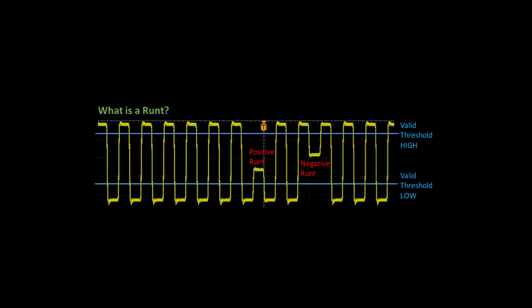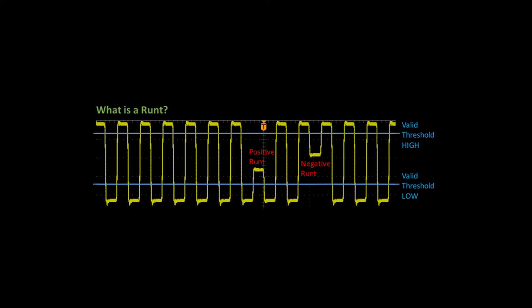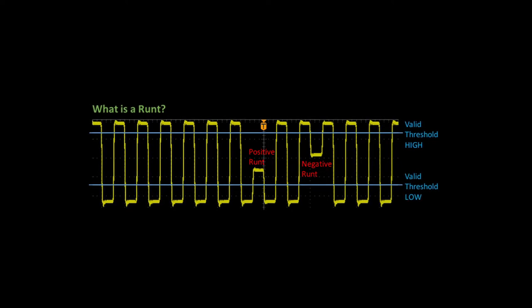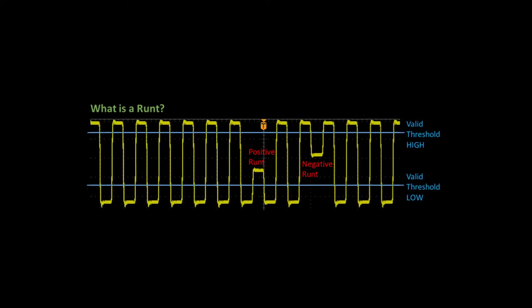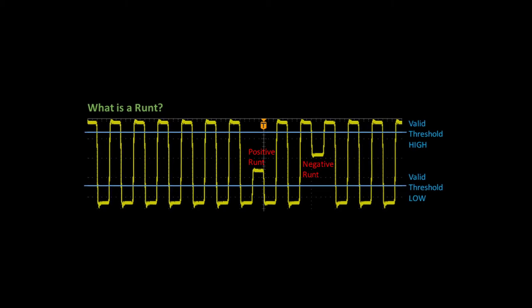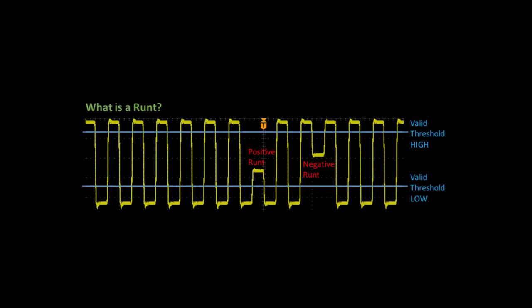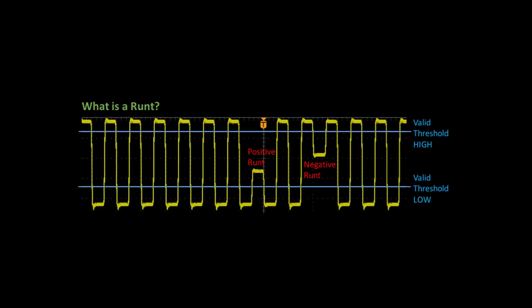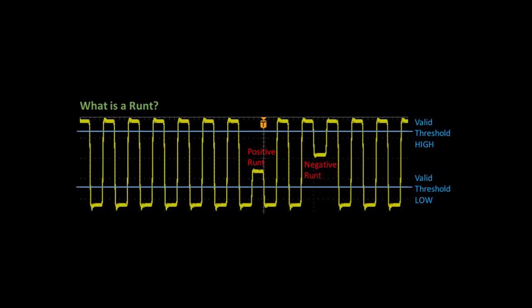Now let's move on to runt triggering. First, I'd better explain what we mean by a runt pulse. Sometimes in digital circuits, pulses don't reach a valid high or low level. This might be because of switching between asynchronous clocks or a metastable output of a flip-flop. The resulting stunted pulses are called runts.